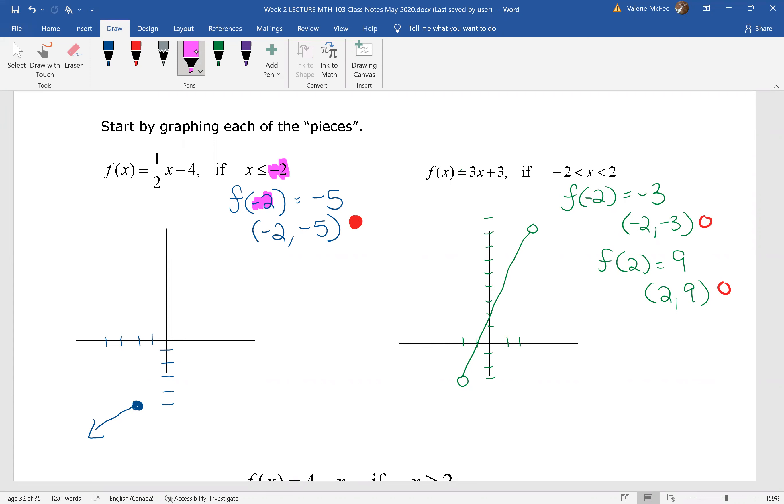Now, how do you know where to go from there? Well, remember, we want x is less than negative two. So you could have substituted in a value, say x equals negative four. Remember, you're going less than negative two.